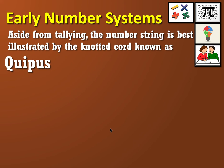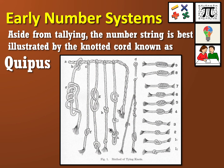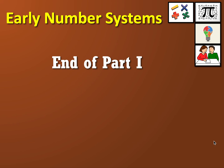Aside from tallying, another counting method is the knotted cord known as quipus — plural for quipu. In this method, the number of knot folds represents a quantity: one fold is one, two folds is two, up to nine. The strings are arranged like a necklace to record totals. This system was used by the Inca civilization to easily count objects. That's the end of Part 1 on early number systems — thank you very much for watching, and please like and subscribe.